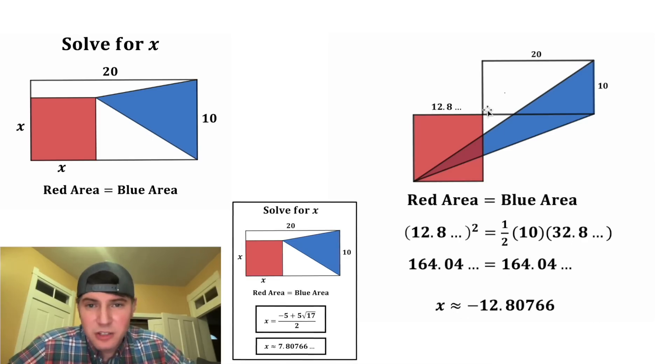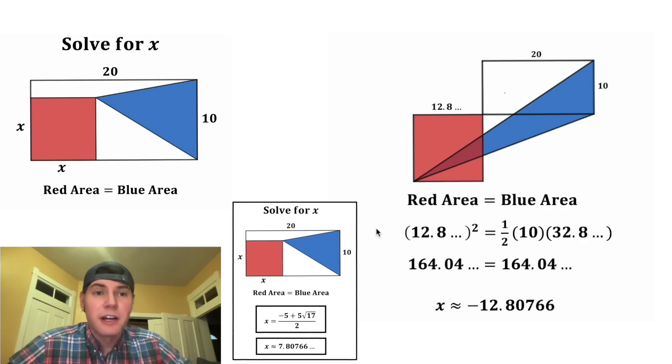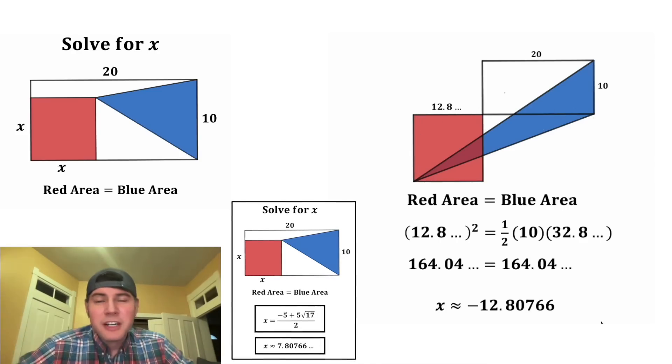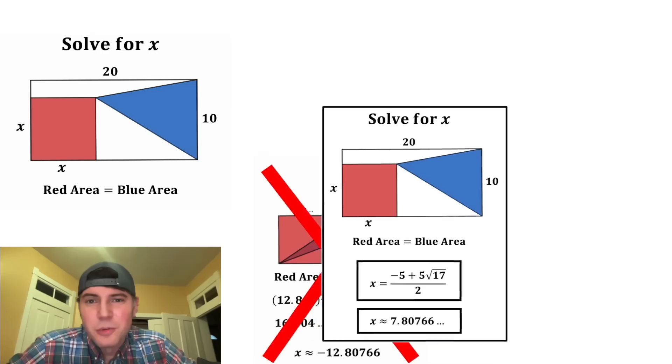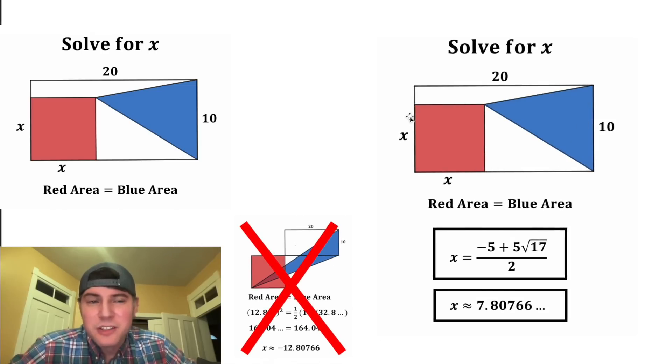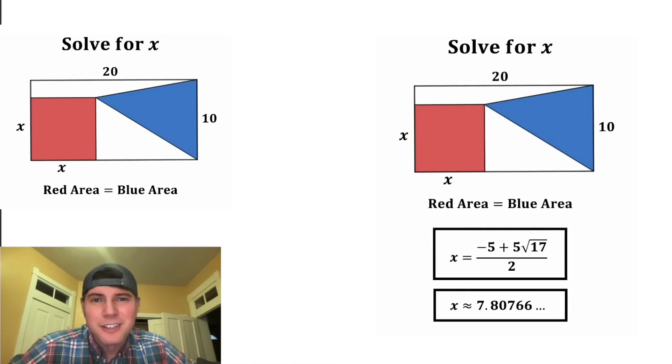This negative solution gives us the location where this red area would be equal to this blue area outside of the rectangle. And we're going to end up discarding this solution because the original diagram had the red square inside of the rectangle. So this is the answer to our question. How exciting.